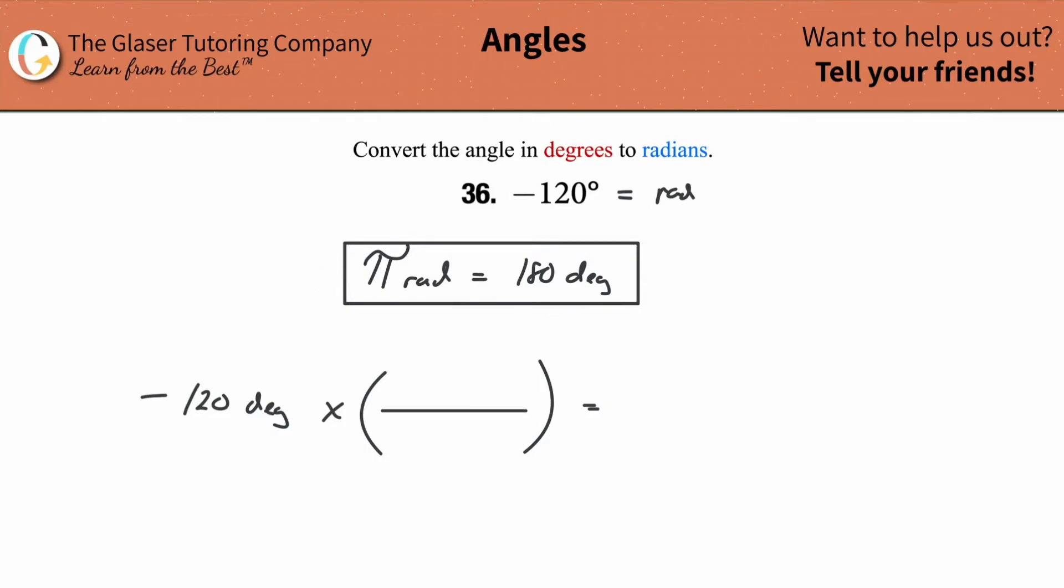Now if I want degrees to cancel, because I don't want them in my answer, I'm going to take my degree measurement here in the known relationship and plug it into the denominator. Look what happens to degrees. Mathematically speaking, they go bye-bye. And that's what we want.